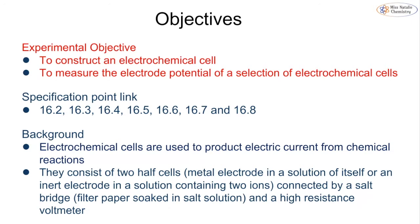The objective of this experiment is to construct an electrochemical cell and then also be able to measure the electrode potential of a number of different cells. Electrochemical cells are used to produce an electric current from a chemical reaction. They consist of two half cells, typically a metal electrode in a solution of itself, or an inert electrode such as platinum in a solution containing two ions. They are connected by a salt bridge, which is basically filter paper soaked in some sort of salt solution, typically potassium chloride or potassium nitrate. And we want to connect it with a high resistance voltmeter.